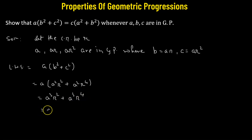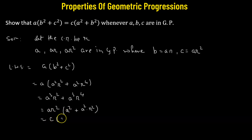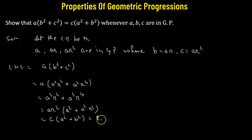Now we take a r squared as the common factor from both terms. So we have a r squared times a squared plus a squared r squared. Here a r squared is simply our third term c, a squared is the first term, and a squared r squared is the square of the second term b. So we have c times a squared plus b squared, which gives us the expression on the right hand side. Hence proved.